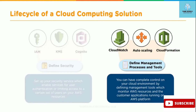There are also a variety of deployment, automation, and monitoring tools that you can pick from. For example, CloudWatch is for monitoring, Auto Scaling is for being elastic, and CloudFormation is to define the management process and tools. You can have complete control of the cloud environment if you define the management tools which monitor your AWS resources and the custom applications running on the AWS platform.